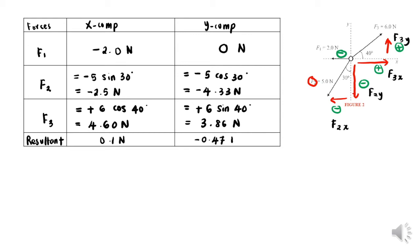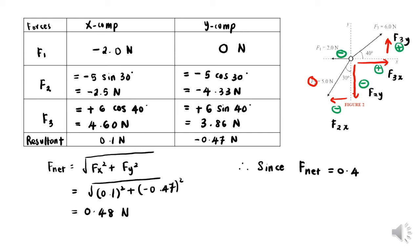So F net, we can find our F net by using the Pythagorean theorem. Substitute the values of Fx and Fy and we get the value to be 0.48 N.